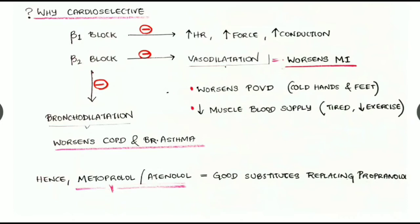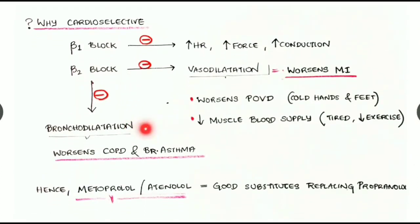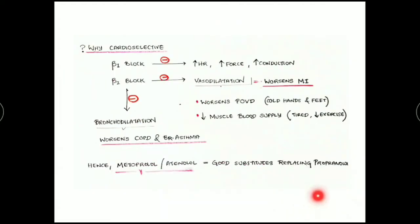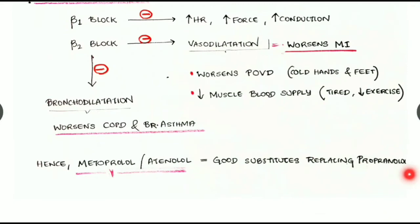Beta-2 blockade also inhibits bronchodilatation, worsening COPD and bronchial asthma. Hence, more beta-1 selective drugs are needed for cardioprotection, and metoprolol or atenolol can be used as good substitutes replacing propranolol.